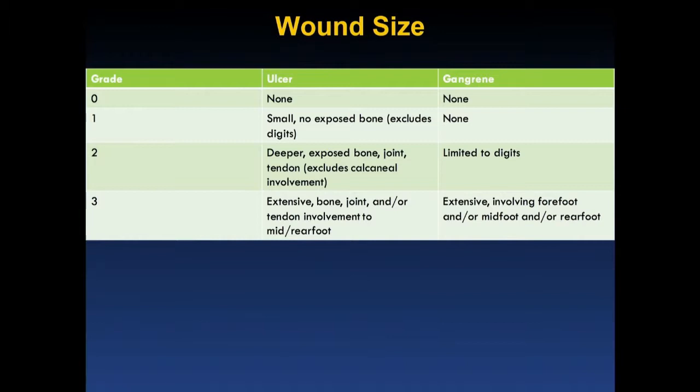With regards to wound size, this is rated 0 to 3: 0 being no ulcer, and 3 being the most extreme — extensive bone, joint, or tendon involvement, and in the setting of gangrene, extensively involving the forefoot, midfoot, or rearfoot.